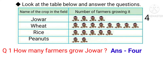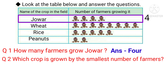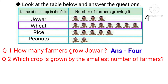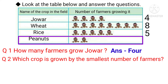Let's move to the second question. Which crop is grown by the smallest number of farmers? If we look and count: jowar has 4 farmers, wheat has 8 farmers, rice has 5 farmers, and peanuts has 2 farmers.